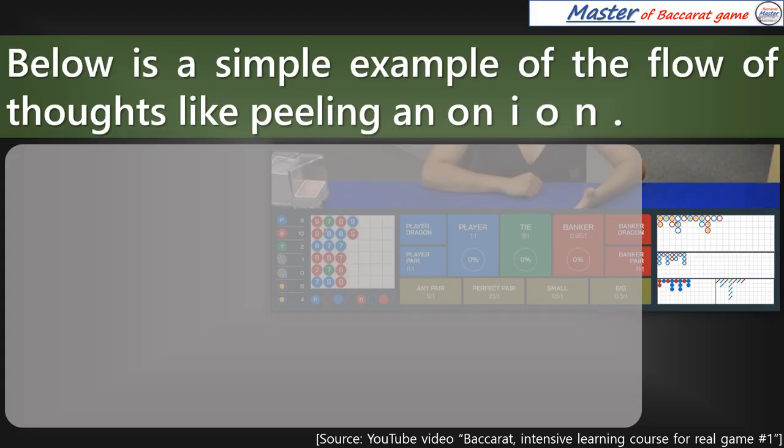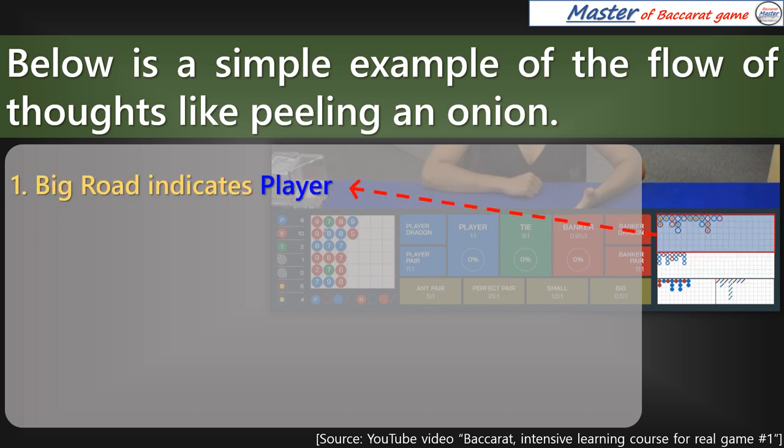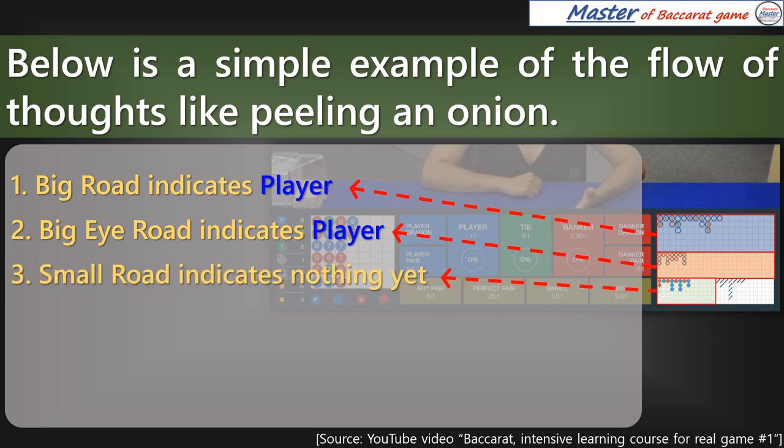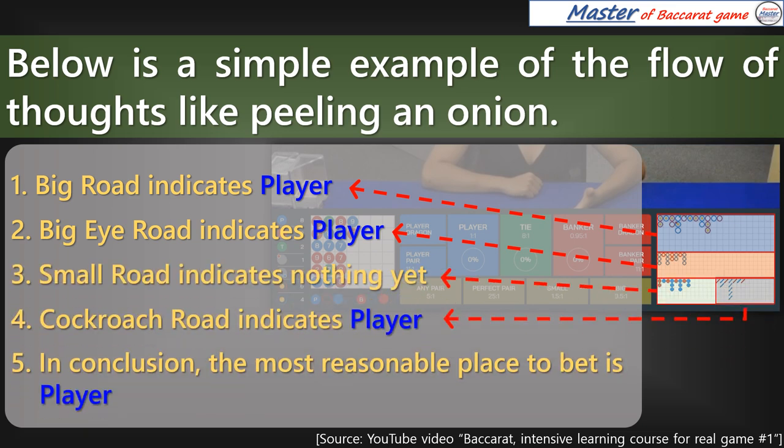Below is a simple example of the flow of thoughts like peeling an onion. First Big Road indicates player. Second Big Eye Road indicates player. Third Small Road indicates nothing yet. Fourth Cockroach Road indicates player. Fifth in conclusion, the most reasonable place to bet is player.